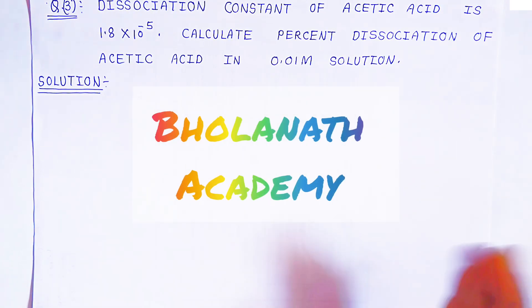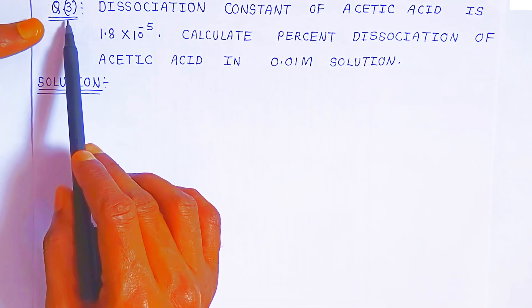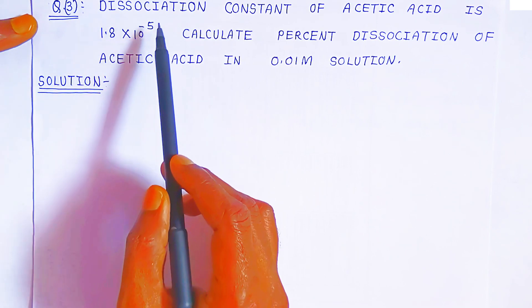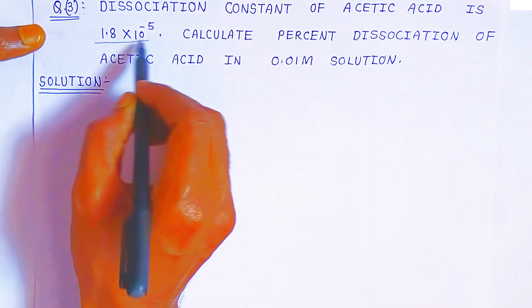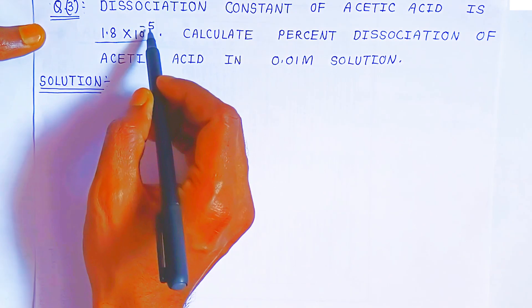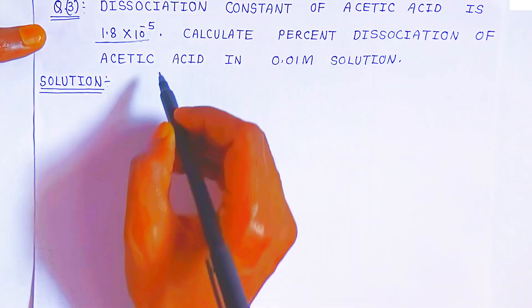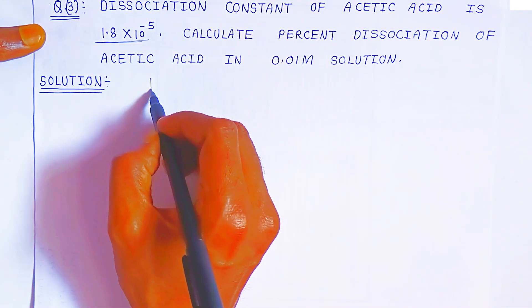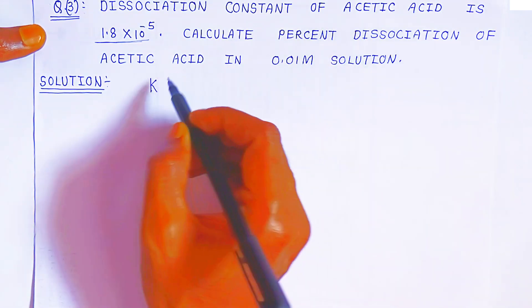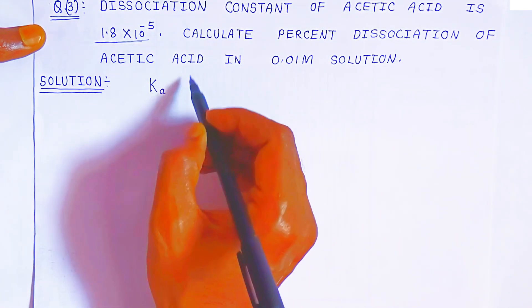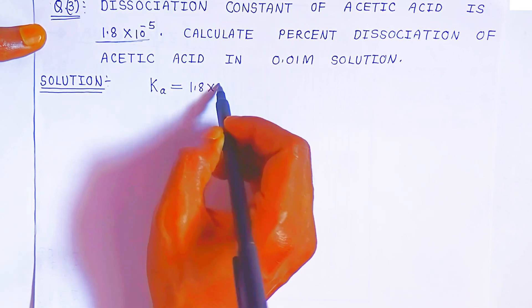Hello students, once again welcome to Bholanath Academy. In this video we are going to see question number three. The dissociation constant of acetic acid is 1.8 into 10 raised to minus 5. Since it is an acid, we write Ka. Ka is given as 1.8 into 10 raised to minus 5.